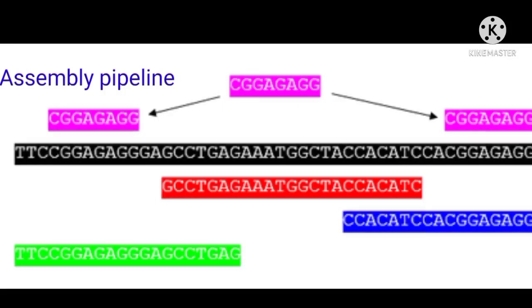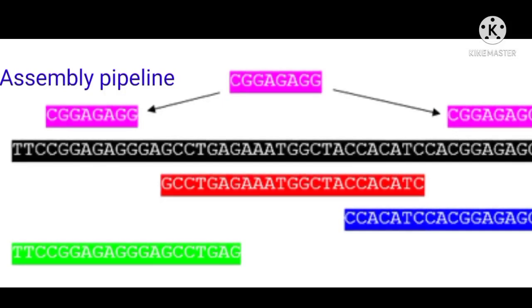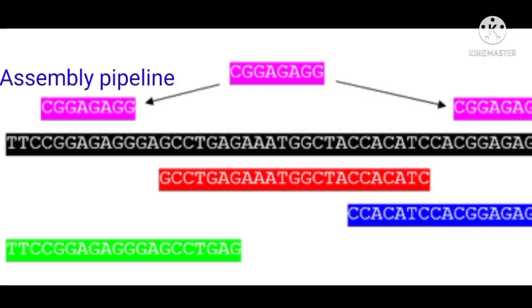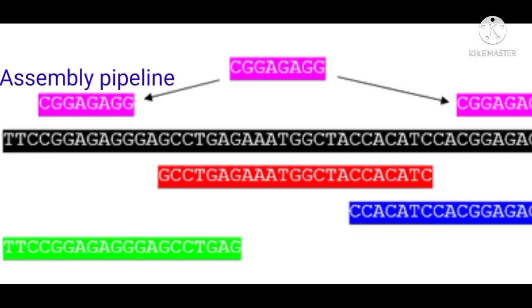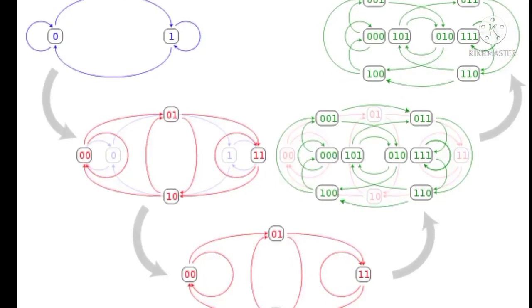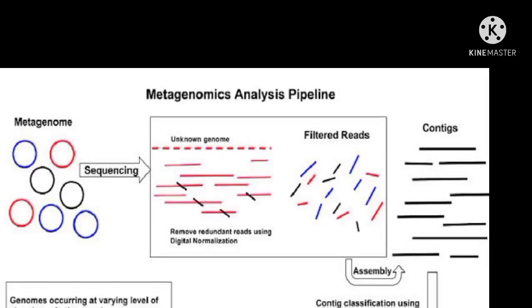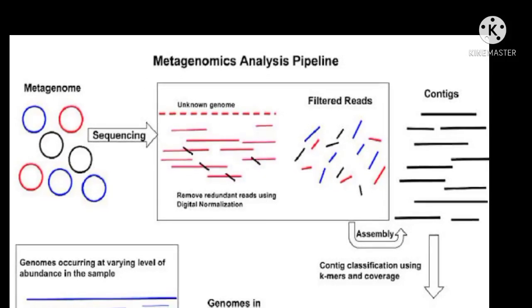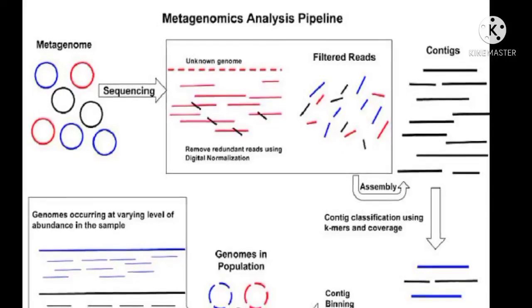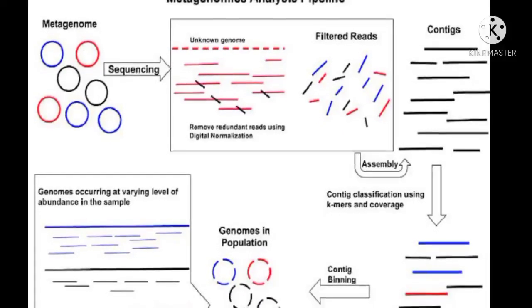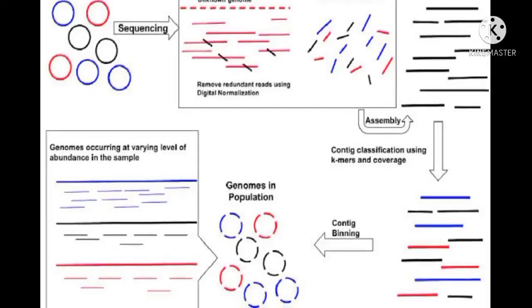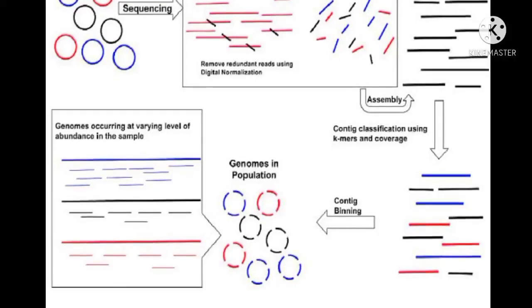Next step is assembly pipeline. Assembly involves the merging of reads from the same genome into a single contig. Most available tools build upon a traditional de Bruijn graph approach to genome assembly. Assembly steps: first the sequence reads are filtered using digital normalization to remove redundant reads, then assemble the reads. The assembled reads are known as contigs. The contigs are classified using k-mers and coverage. Last step is contig binning.